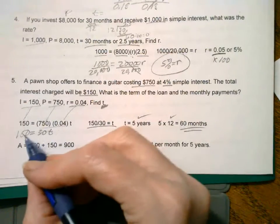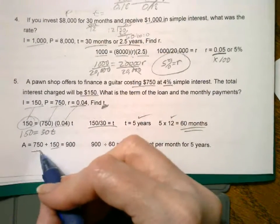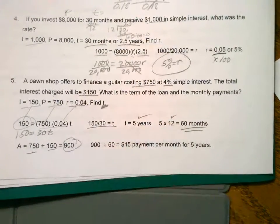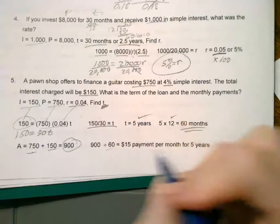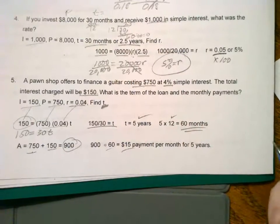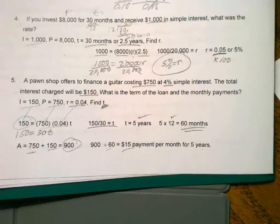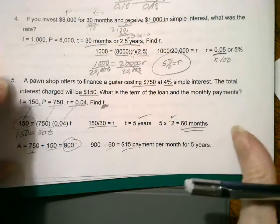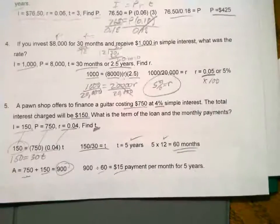So if the interest was $150, we can add that to the cost to get the total cost of the financed guitar. And if you divide it by 60, you'll get the number of payments per month for five years. Those are the examples. We're going to do something else next.